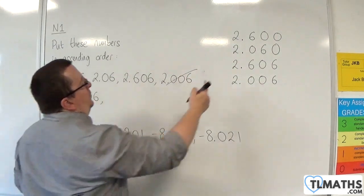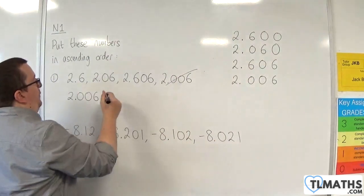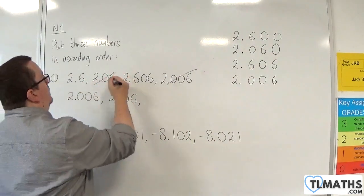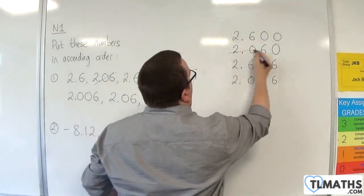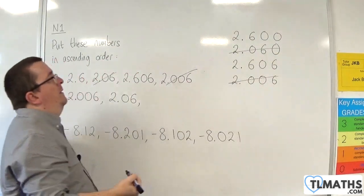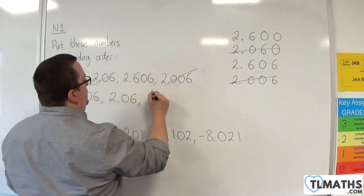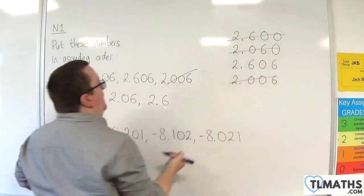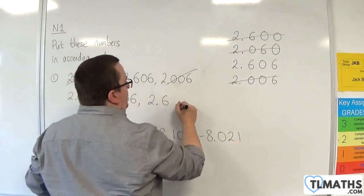The next smallest is 2.06. Okay, so I've done that one, and I've done that one. Then we've got 2.6. And then I've got 2.606.